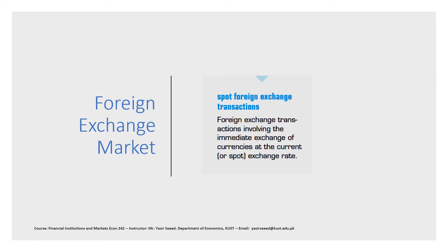Others, such as the German mark, became very undervalued. The Smithsonian Agreement of 1971 sought to address this situation: major countries allowed the dollar to be devalued, and the boundaries within which exchange rates could fluctuate were increased from one percent to two and a half percent. By 1973, the exchange rate boundaries were eliminated altogether, effectively allowing exchange rates of major currencies to float freely.